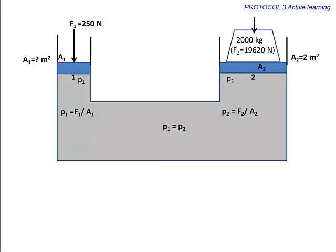For a hydraulic jack arrangement shown in the figure, calculate the area of piston at location 1 if a load of 2 tons is balanced by a force of 250 N. The area of piston at location 2 is 2 m². We can calculate this area by using the equivalence of pressure at location 1 and 2.